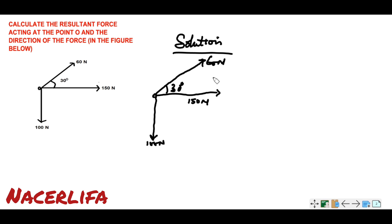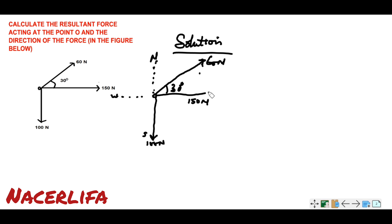We want to resolve it horizontally and vertically. Let us draw a line to pass through this point. Call this the north side, call this the east, this side will be west, and this side will be south. We use y to represent the vertical components of this vector and x to represent the horizontal component. From the trigonometric relation SOH-CAH-TOA, we shall be using this to resolve the force.